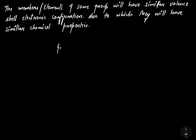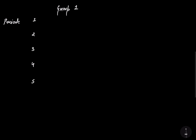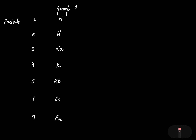Let me give you an example with group number one. I'm marking the period numbers: period 1, period 2, period 3, period 4, period 5, period 6, and period 7. The members of group number one are hydrogen, lithium, sodium, potassium, rubidium, cesium, and francium.